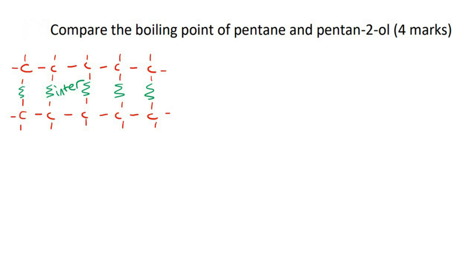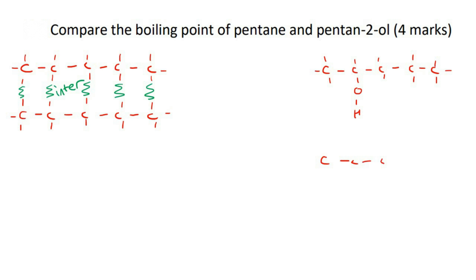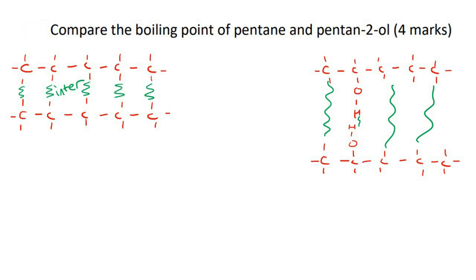Now let's draw two pentan-2-ol molecules. Pentan-2-ol is an alcohol where you have an OH on carbon number two, and then of course hydrogen everywhere else. Let's draw another one - this time I'll make the OH face upwards. We would be looking at these intermolecular forces between the molecules.